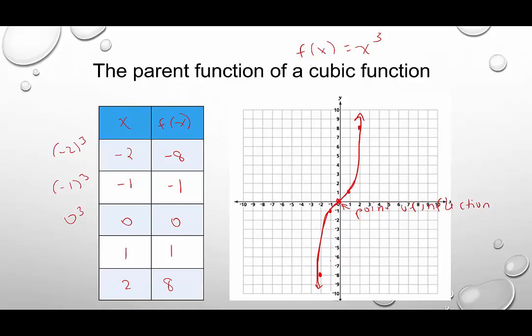Concave down just means that it's facing downward. So if you use your hand, your hand would be opening downward to represent the first part, and then it would be opening up to represent the right of the graph. So that's the point of inflection, is where the concavity changes.